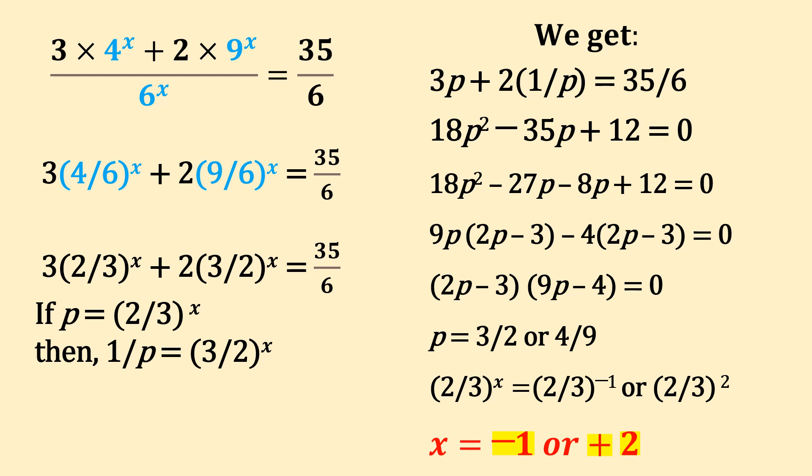The first gives 2 by 3 whole power x, let us denote it as p. The second gives 3 by 2 whole power x. This is the reciprocal of p, that is, it is equal to 1 by p.